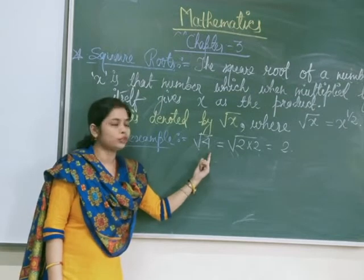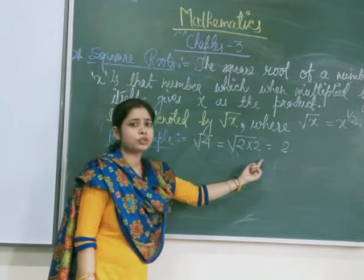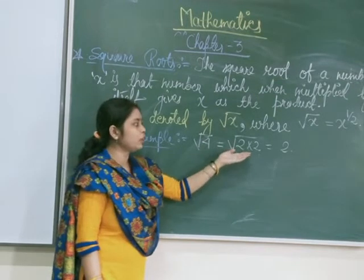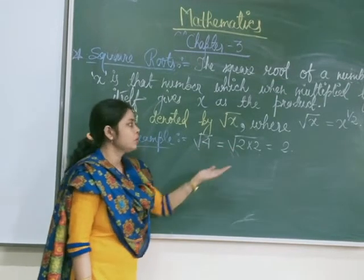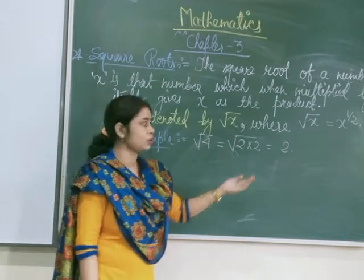√4. √4 means what? Root under 2. So 4 is the multiplication of 2, how many times? 2 times. So we can say that √4 is the square root of what? 2.